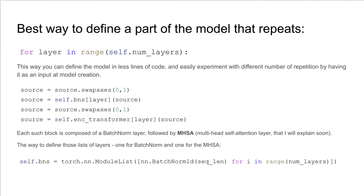Now, the best way to define a part of the model architecture that repeats itself is by using a for loop with lists of layers. And this way you can define the model in less lines of code and easily experiment with different number of repetitions by having it as an input at model creation. Each such block is composed of a batch norm layer, followed by a multi-head self-attention layer, that I will explain soon. The way to define those lists of layers is using the modulist command.